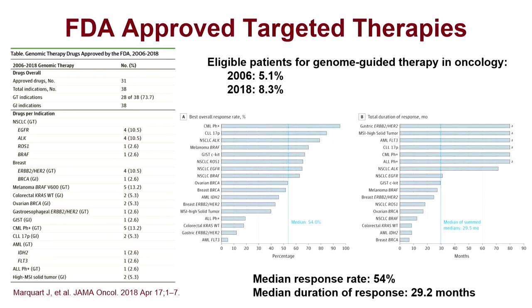What keeps us excited is that the response rates in patients who go on these therapies are actually quite good. The median response for these therapies is 54%, meaning those tumors shrink by at least 30% — a meaningful response in oncology. Importantly, the duration of response is quite good, with advanced cancer patients living almost three years on one therapy. These data are biased by a few agents with very profound efficacy, including BCR-ABL tyrosine kinase inhibitors and MSI-high patients treated with immunotherapies, which have some very profound and durable responses.